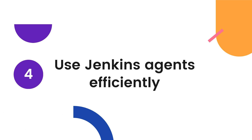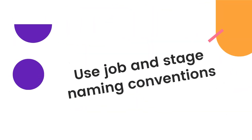Number 4: Use Jenkins agents efficiently to distribute the workload across different nodes. This helps to improve the performance and scalability of your pipelines.